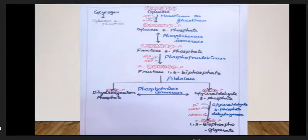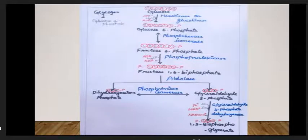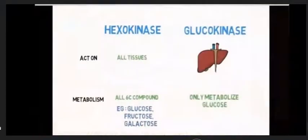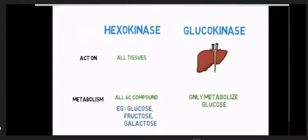Step 1 of glycolysis: Glucose has 6 carbon atoms. In the hexokinase or glucokinase reaction, ATP is converted to ADP and one phosphate group is added to the 6th carbon atom, producing glucose-6-phosphate. Hexokinase is present in all tissues and metabolizes glucose, fructose, and galactose. Glucokinase is present in the liver.